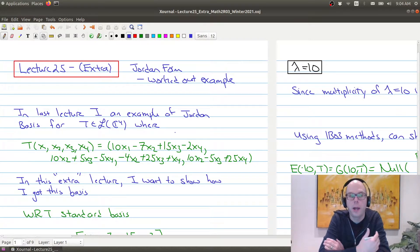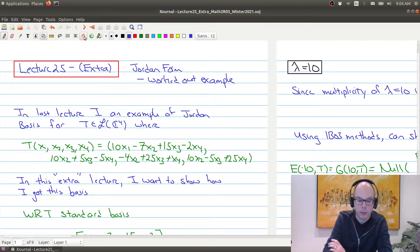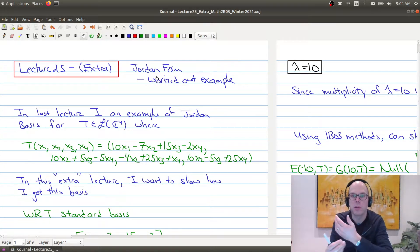Hello, welcome to an extra extended version of Lecture 25 for Math 2R03. This is kind of extra because I wanted to spend a little bit of time giving you an example of a worked out example of finding the Jordan form of a matrix, just so that you have an example that you can look at maybe to help you when you're looking at the proof. Now, as you'll see from this extra lecture here, that finding these things is something you can do.